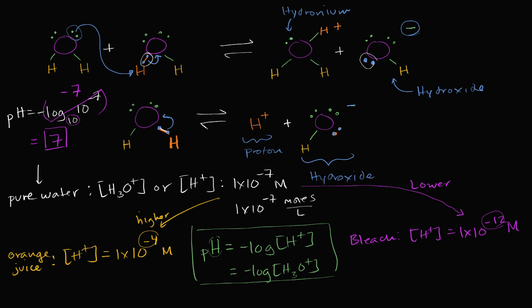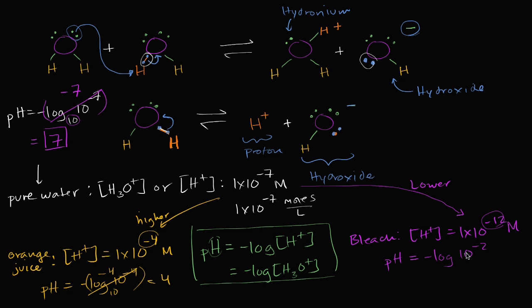What about orange juice? The pH is going to be the negative log of 10 to the negative 4. What do I raise 10 to in order to get 10⁻⁴? I raise it to the negative 4 power. The negative of negative 4 is positive 4. By the same argument, applying the same definition, the pH of this bleach is equal to the negative log of 10 to the negative 12 — and that equals the negative of negative 12, which is positive 12.